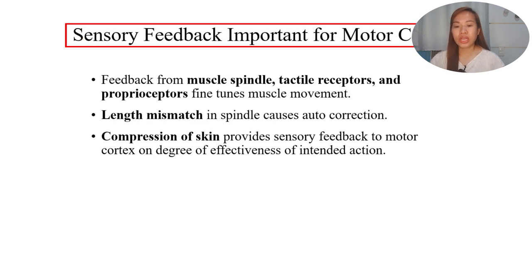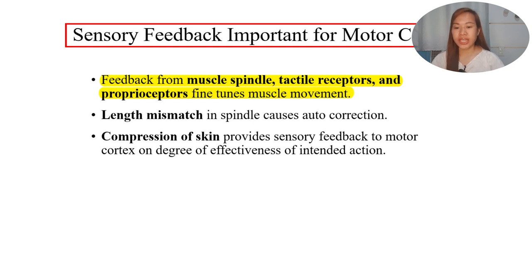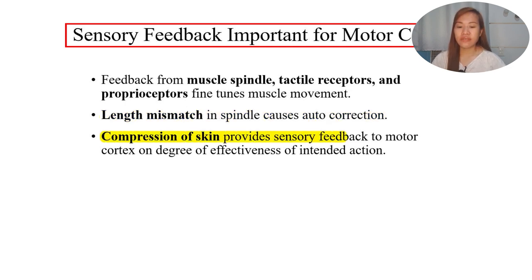Sensory feedback is important for motor control. There is feedback from muscle spindles, which feed back the length of the muscle. Tactile receptors and proprioceptors fine-tune muscle movements. Length mismatch in the spindle causes autocorrection - that's why we need muscle spindles and Golgi tendon organs for feedback. Compression of skin provides sensory feedback to the motor cortex on the degree of effectiveness of the intended action.